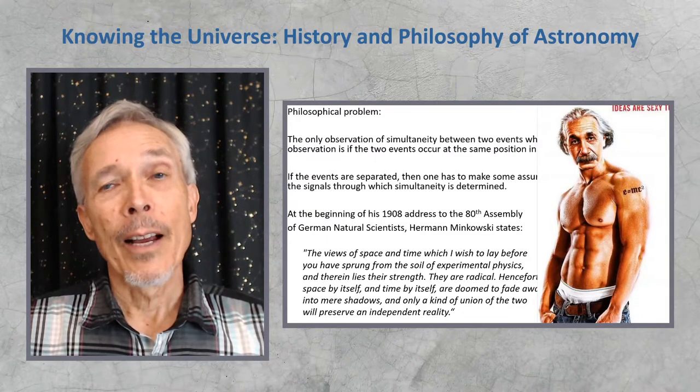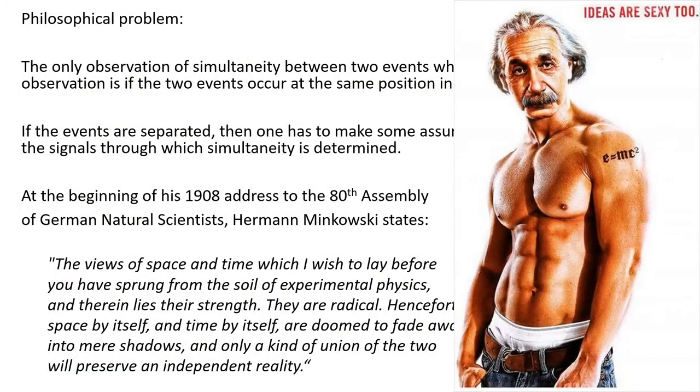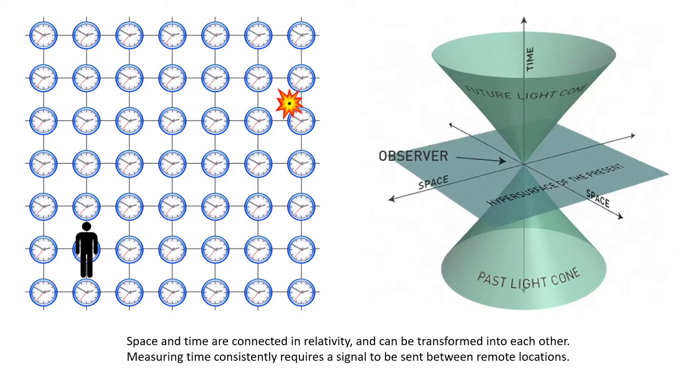Einstein had this idea too, and we should always remember that ideas are sexy too. Here's the issue of simultaneity of clocks. Since space and time are connected in relativity and can be transformed into each other, measuring time consistently requires a signal to be sent and coordinated between remote locations, and this can only be done in a finite time because of the finite speed of light. And this creates the issue.